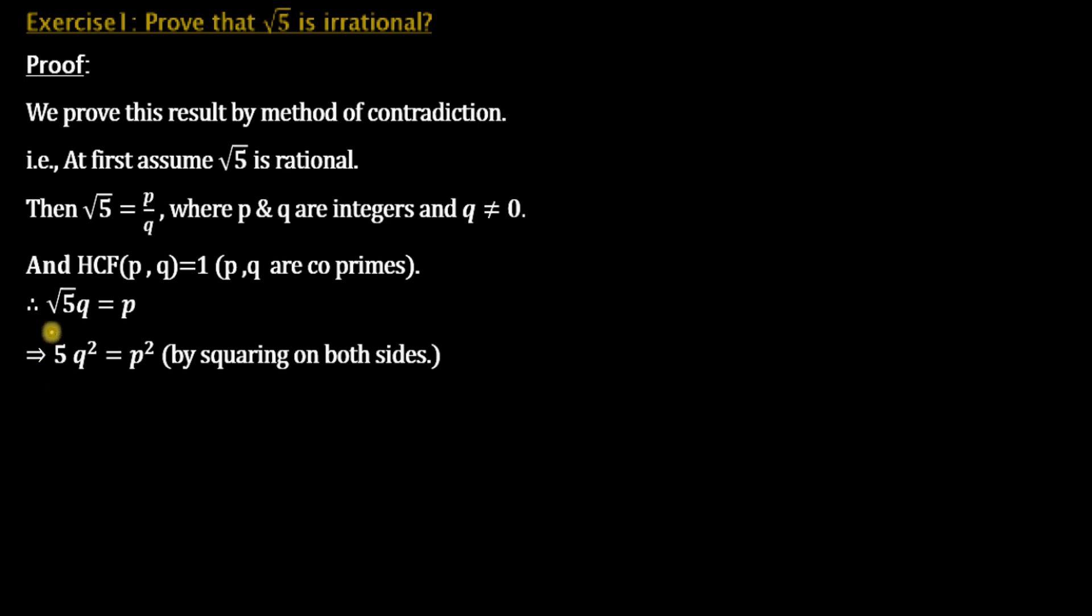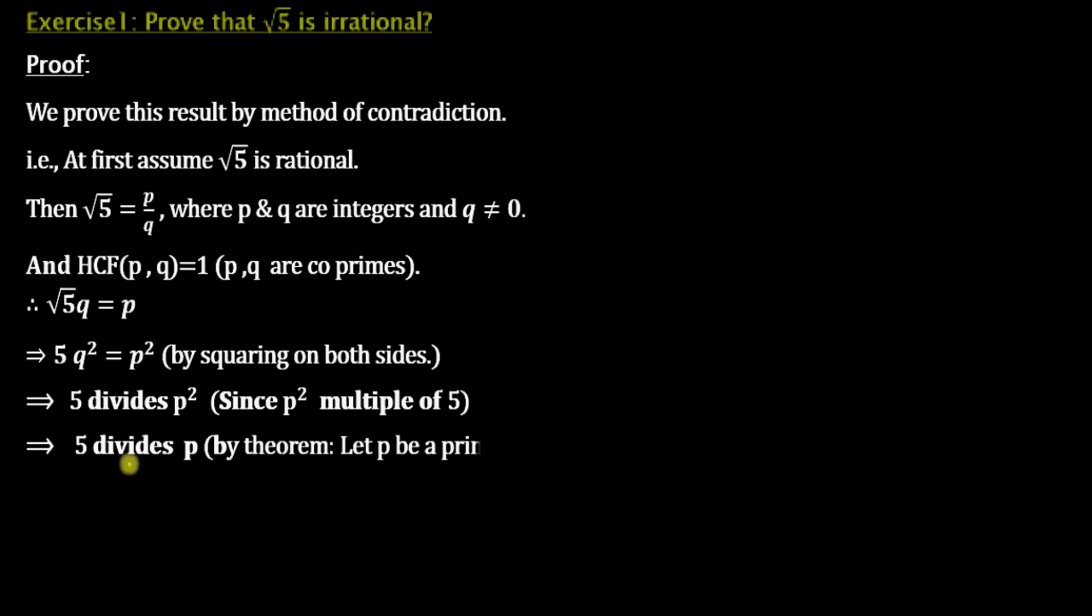What does this imply? 5 divides P², or P² is a multiple of 5. As in the previous cases, 5 divides P² since P² is a multiple of 5. Then what does this imply? 5 divides P by the theorem: Let P be a prime number. If P divides A², then P divides A, where A is a positive integer.